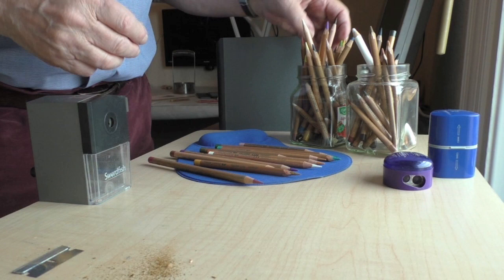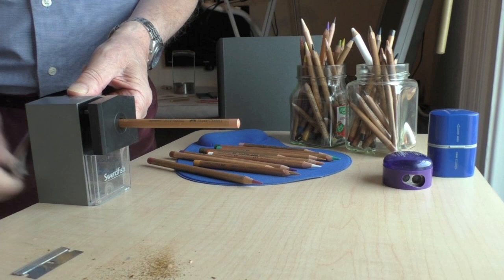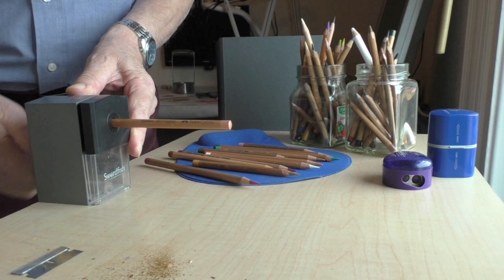What you do is put a pencil in, and you've got a little button on the side which pulls this out and that holds and grips the pencil. Then you turn the handle with the blade, and you get a point like that.